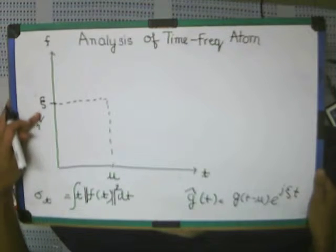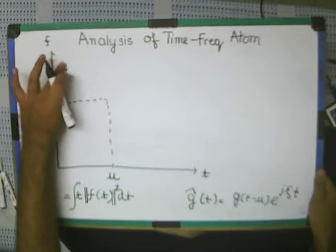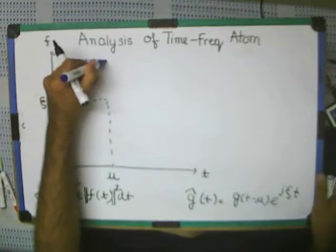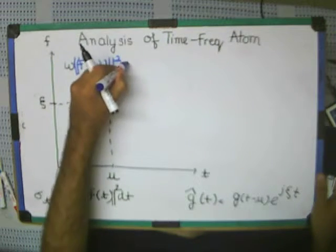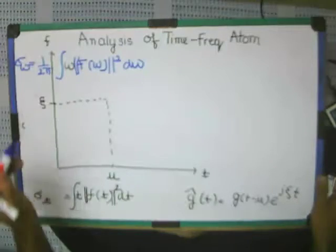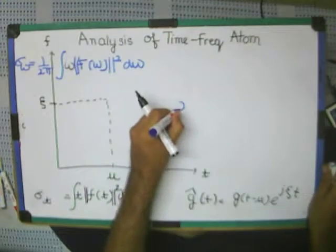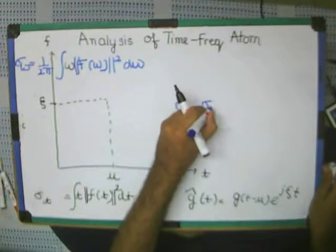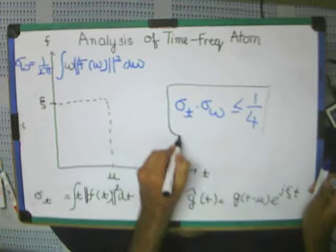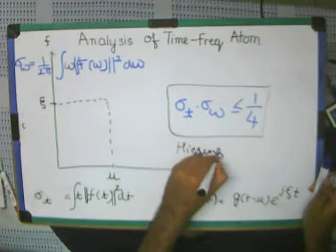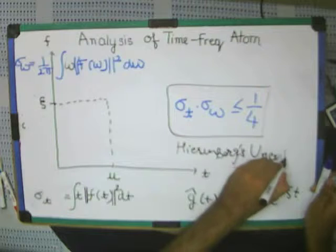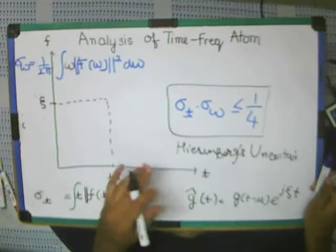In the frequency domain, sigma_omega will be omega times f(omega) squared, integrated with 1 over 2 pi, which equals psi(omega). In that sense, the product psi_t times psi_omega will always be less than or equal to 1/4. This is given by Heisenberg's uncertainty principle. I can prove it but it is very lengthy and at the end you will get more confused.